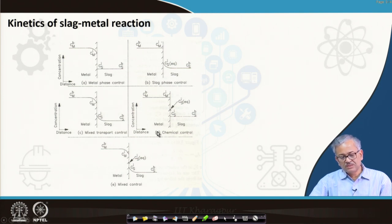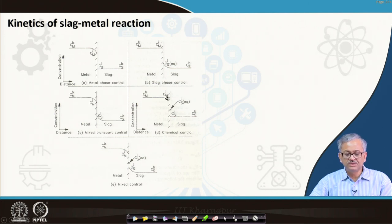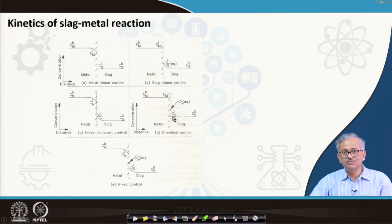In the mixed transport control case, mass transfer on the metal side as well as mass transfer on the slag side both control the reaction. These resistances are comparable and the chemical reaction at the interface is fast, so complete partitioning takes place at the slag-metal interface. All the resistance lies on both the metal side and the slag side concentration boundary layers.